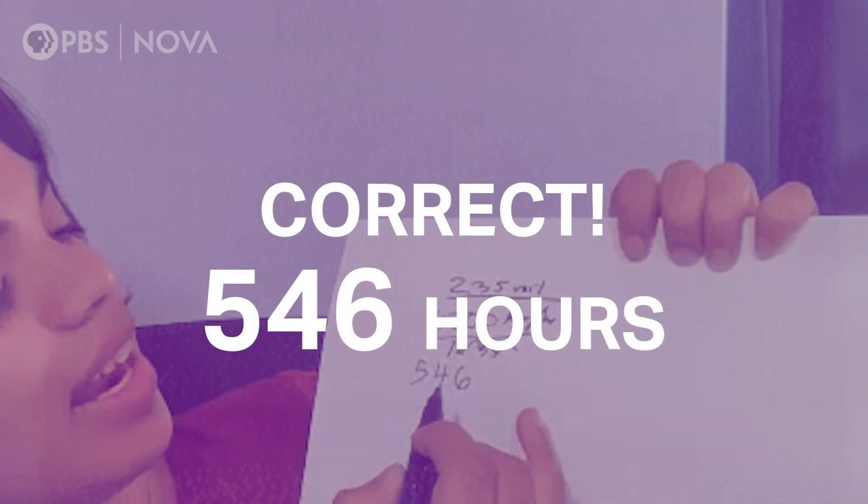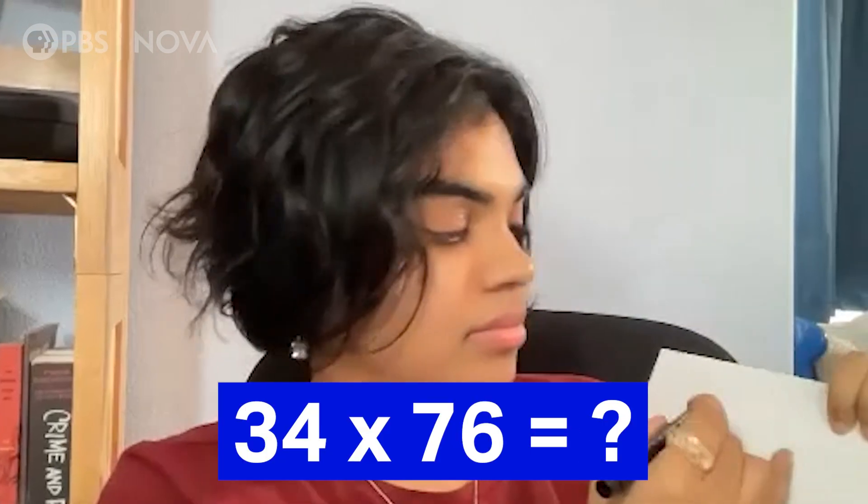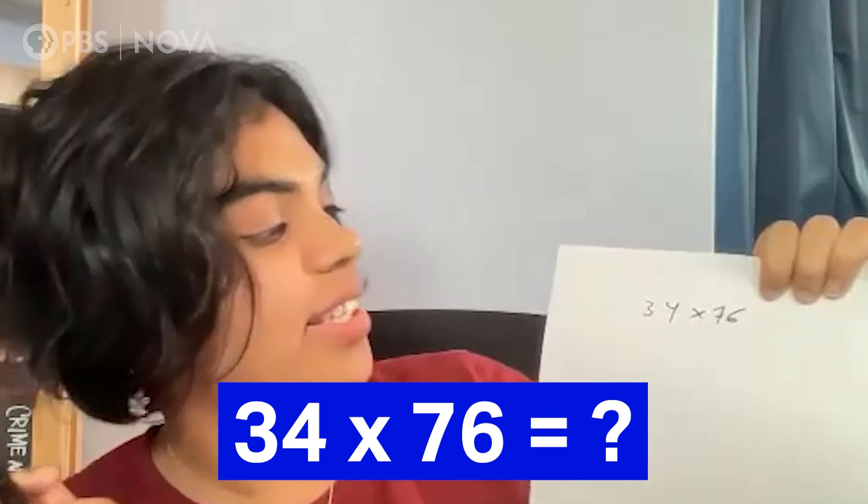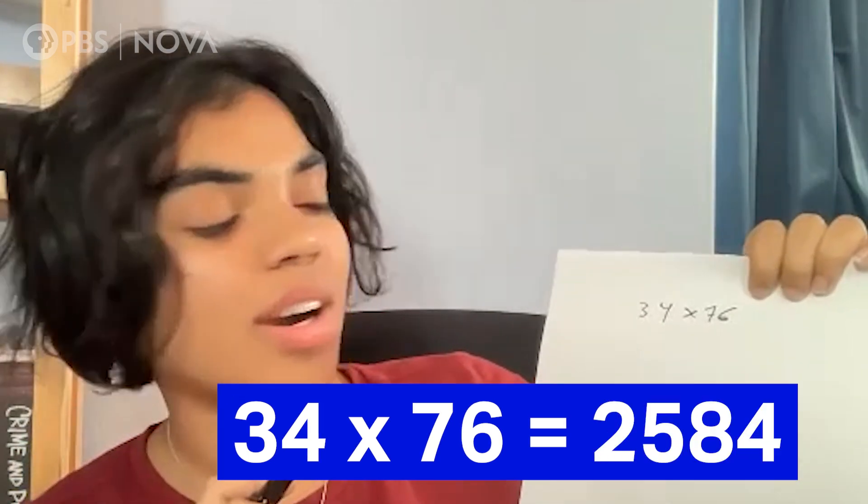I can't keep up with that, so what about multiplication? What is 34 times 76? 34 times 76 is 2584. Wow.